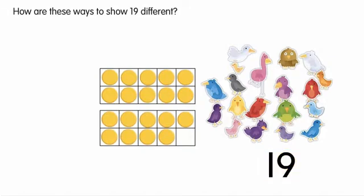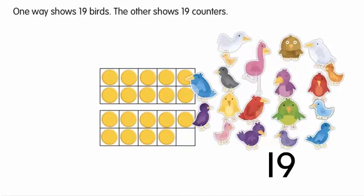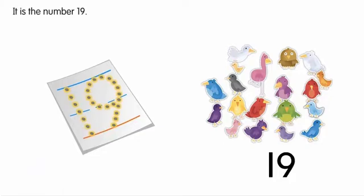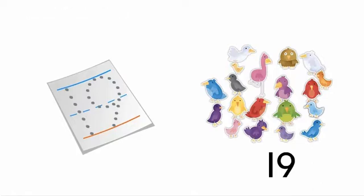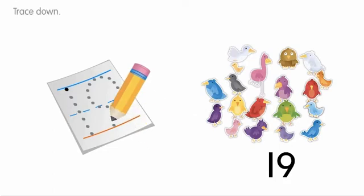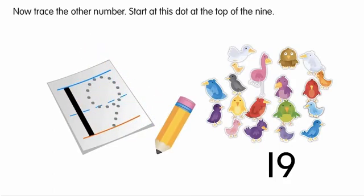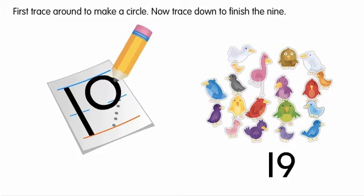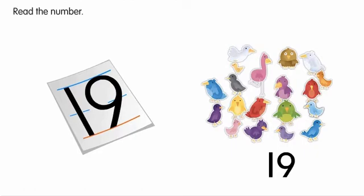How are these ways to show 19 different? One way shows 19 birds. The other shows 19 counters. What number do you see? It is the number 19. Why is this number shown? 19 is how many birds there are. Where do you start to trace? Start at this dot at the top. Trace down. Now trace the other number. Start at this dot at the top of the 9. First, trace around to make a circle. Now trace down to finish the 9. Read the number. It says 19.